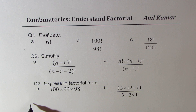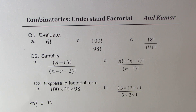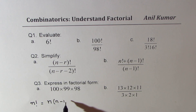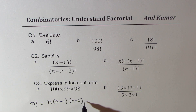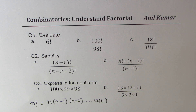Let me first tell you what factorial is. If I write n factorial, it really means it is the product of consecutive non-negative natural numbers. So n times n minus 1 times n minus 2 and so on, all the way down to 2 times 1. In combinatorics, we actually deal with very big numbers and this is a very good way of representing them.